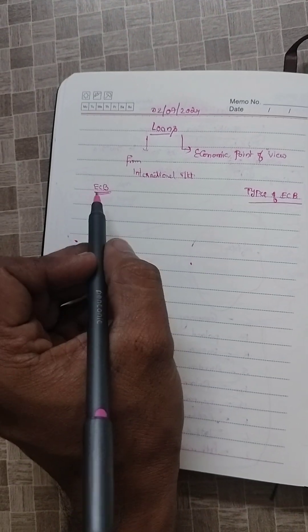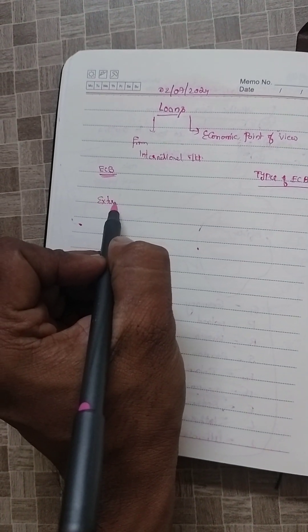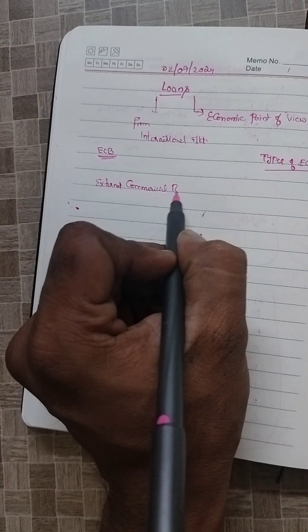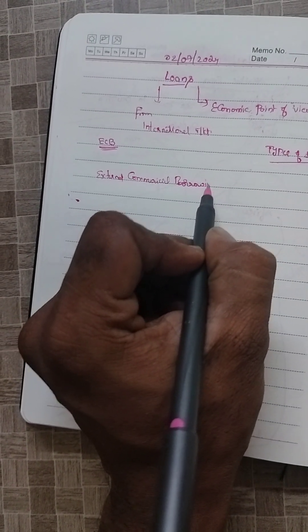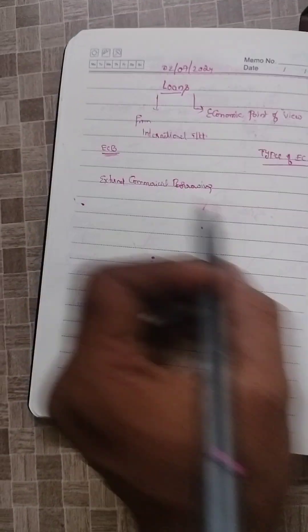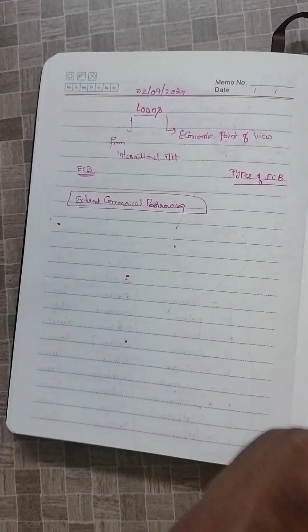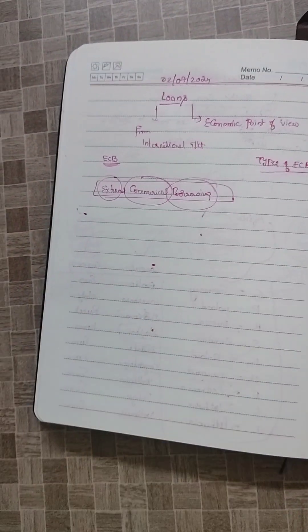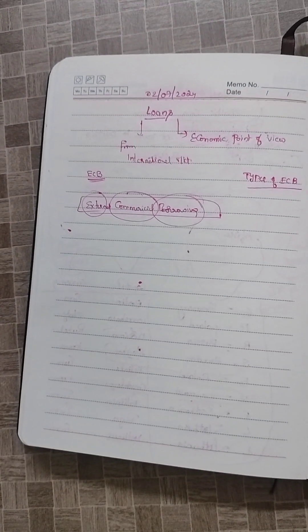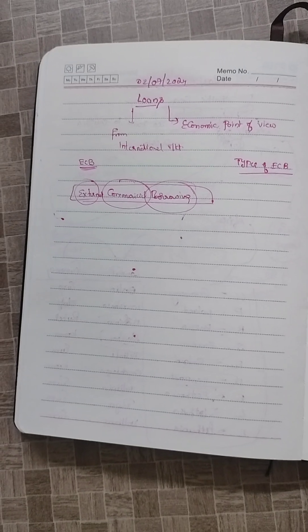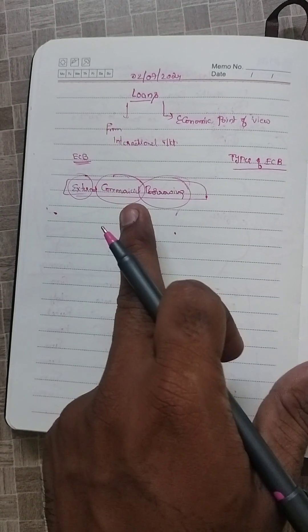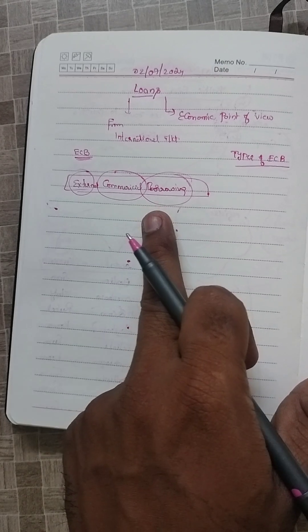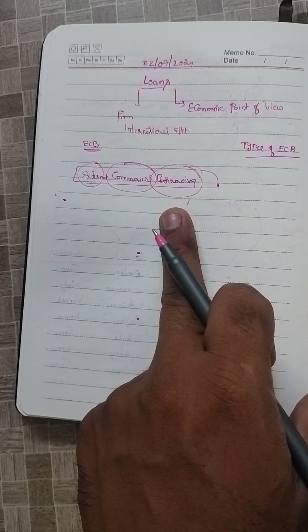Here, ECB refers to external commercial borrowings. External means outside, commercial is from a commercial point of view, and borrowing means taking a loan. These are commercial loans raised from the international market at market rates without any concession.